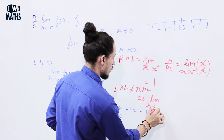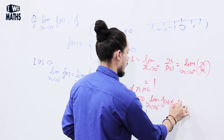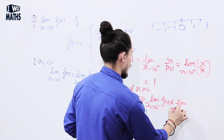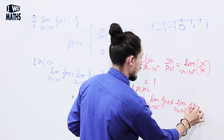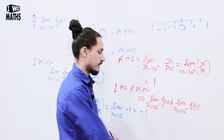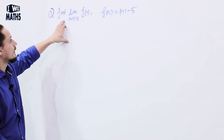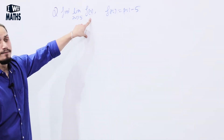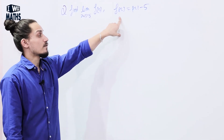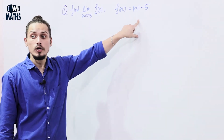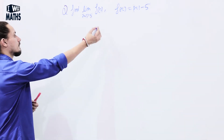We can also write: lim (x → 0⁻) f(x) ≠ lim (x → 0⁺) f(x). Hence the limit does not exist. Now in the next example, we have to find the limit of f(x) as x approaches 5, where f(x) = |x - 5|.